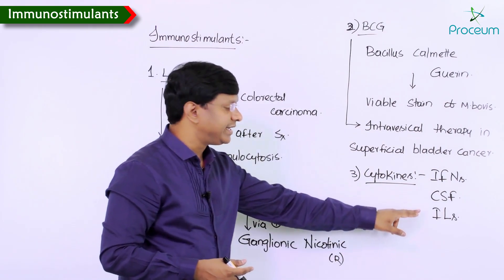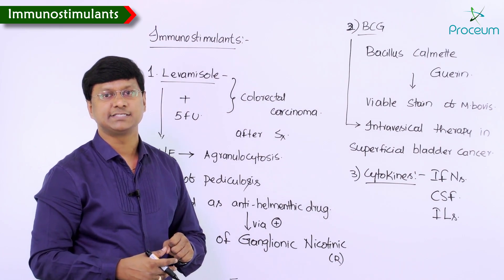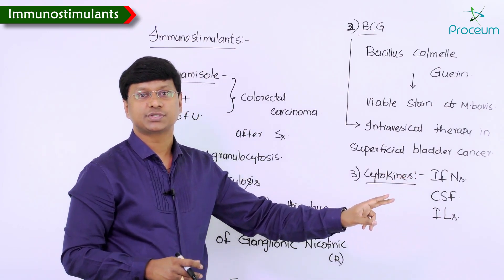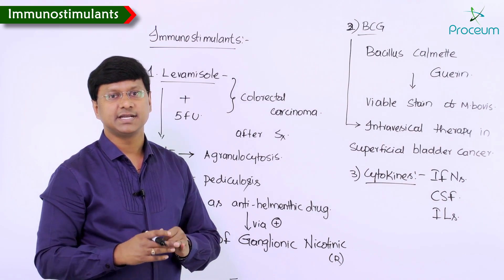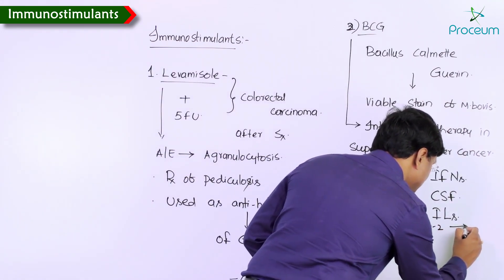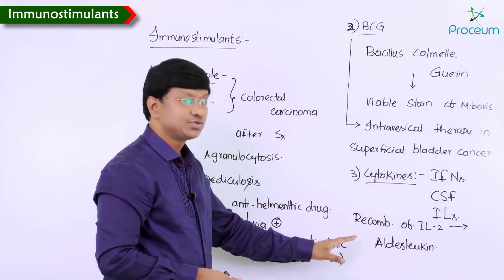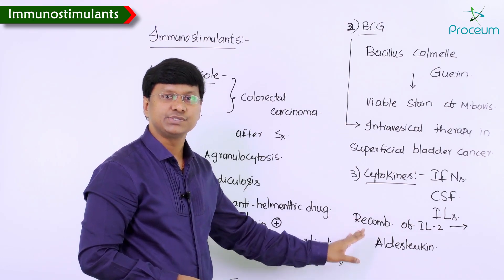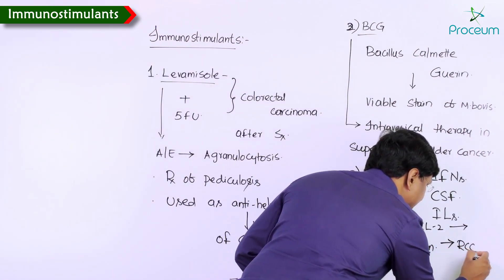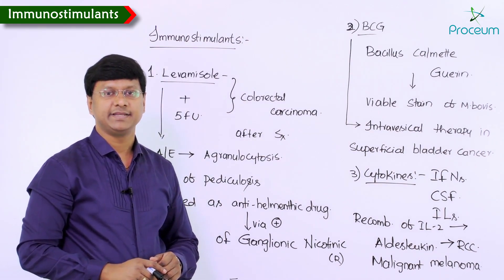The recombinant form of interleukin-2 is aldesleukin. This is used in case of malignant melanoma and renal cell carcinoma.